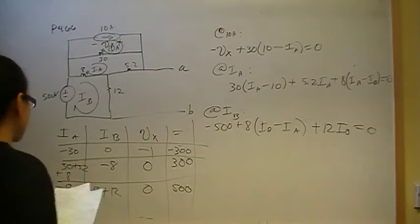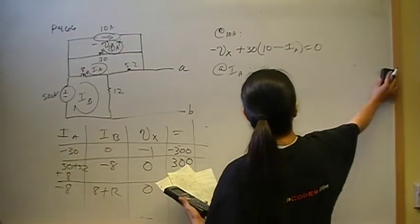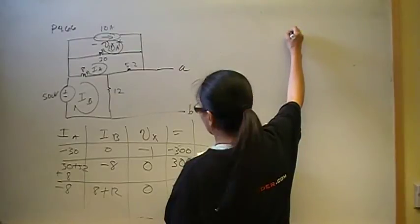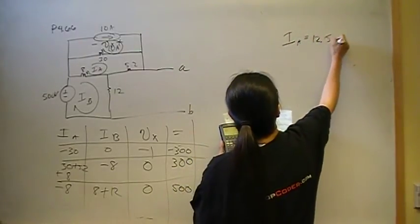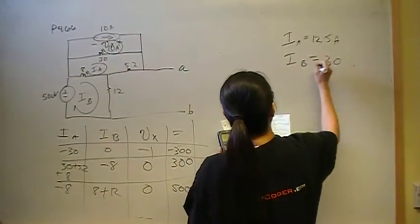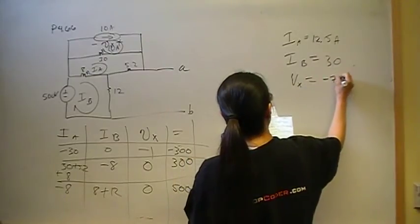All right. So I did come up with the same answers. That means I'll tell you what I got. So once you put that into your simultaneous equation solver, you should come up with I-A is 12.5 amps. I-B is 30. And Vx is negative 75 volts.